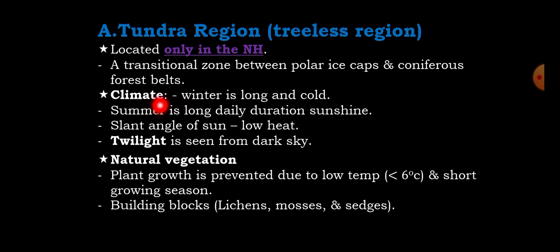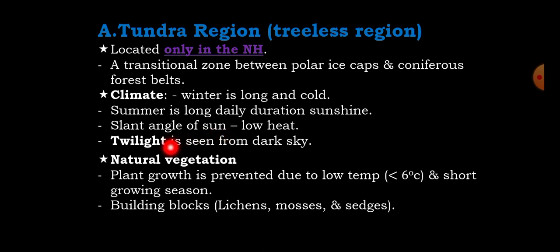The climate of the tundra region is long and cold winter with a short and hot summer. Summer has a long daily duration of sunshine. This region receives sunlight at a slant angle, so the amount of insolation or solar radiation that reaches the ground is very low. Twilight is seen from a dark sky — twilight means illuminated light during sunrise and sunset.